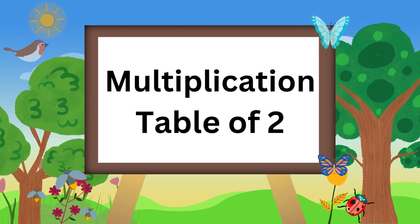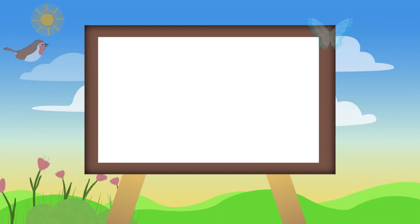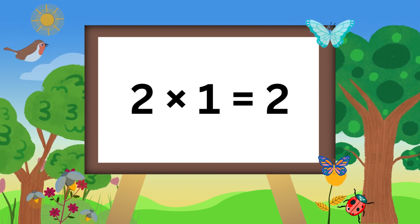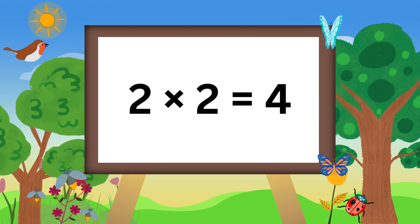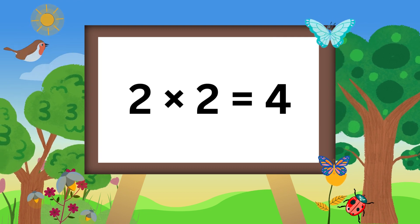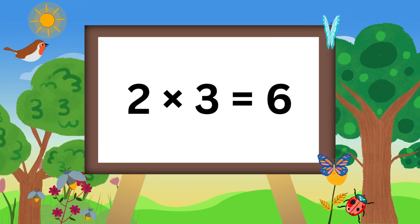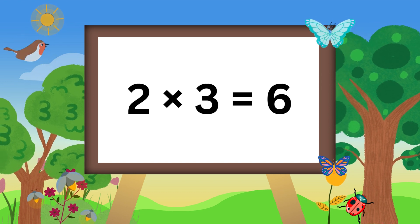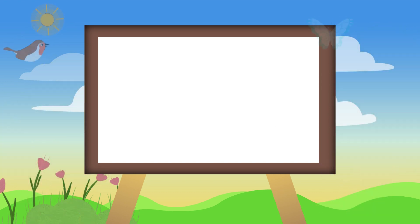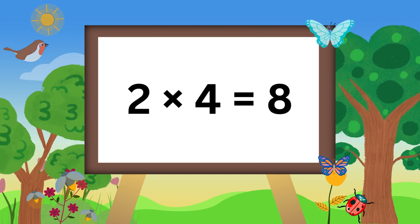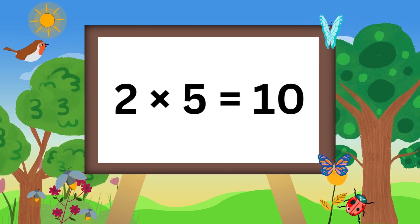Multiplication table of two. Two ones are two. Two twos are four. Two threes are six. Two fours are eight. Two fives are ten.